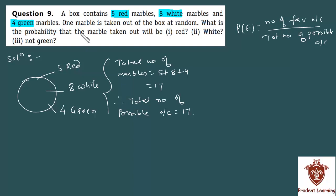Now, let's see what you have given. One marble is taken out of the box at random. What is the probability that the marble taken out will be red? What is the probability that the marble taken out will be red?